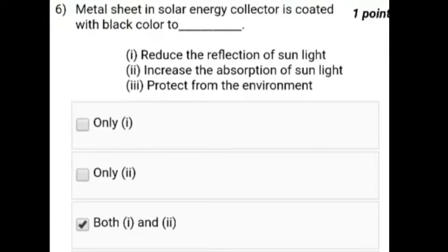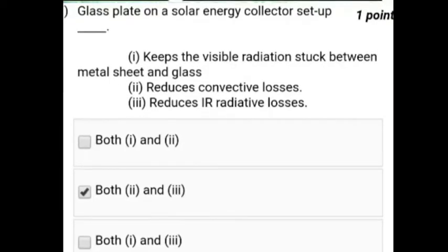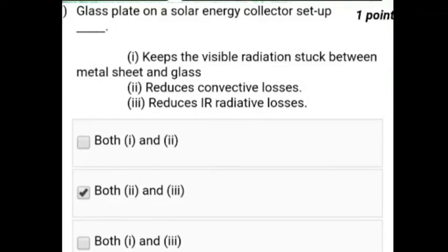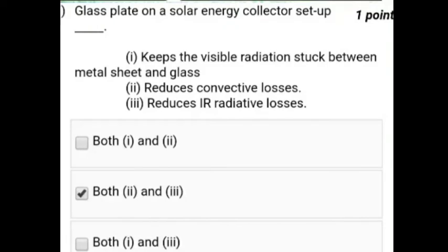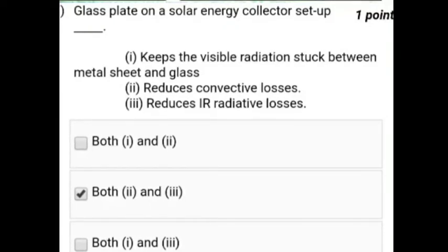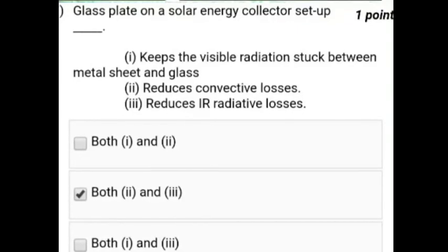And the seventh question is: glass plate on a solar energy collector setup - keep the visible radiation stuck between metal plate and glass, reduce the convective losses, reduce the IR radiation. So this option is second and third. Both second and third are correct.